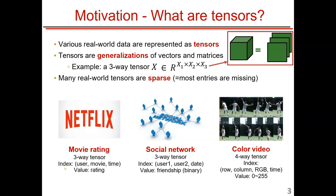Most real tensors are very sparse, meaning many entries are missing. The most famous example is a movie rating tensor. There are three axes: the first is user, the second is movie, and there is also a time axis. The value stored is the rating.